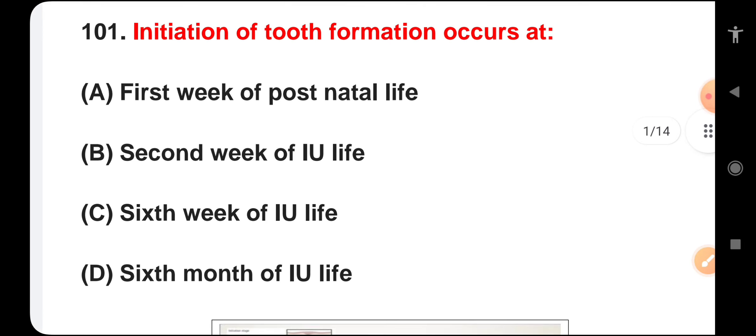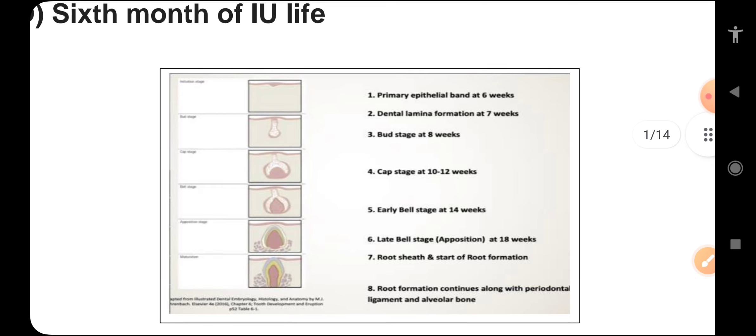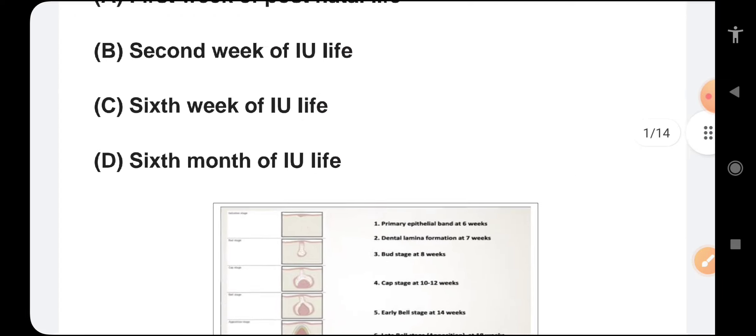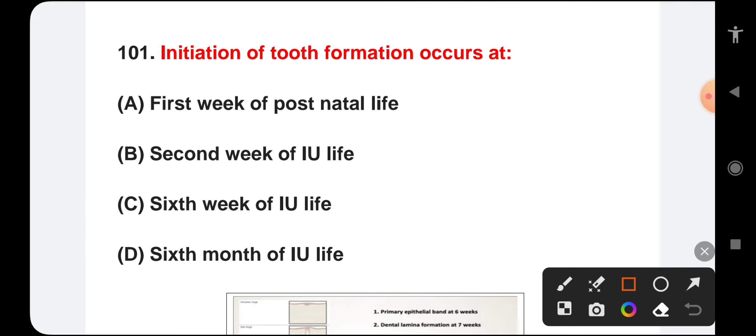Initiation of tooth formation occurs at first week of postnatal life, second week of intrauterine life, six week of intrauterine life, or six month of intrauterine life. Here's the explanation. Tooth formation starts in intrauterine life at six weeks. This is the initiation stage. The correct answer is six week of intrauterine life.